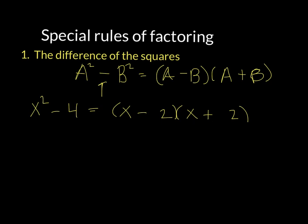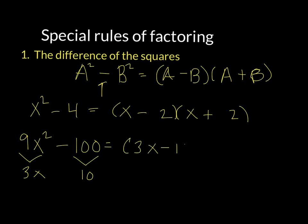Let's try a little bit harder one. Let's say we have 9x squared minus 100. You have to think about what the square roots of each of these are — it's 3x and 10. So you have 3x minus 10 and 3x plus 10. That is the difference of squares. One of the most important things is that the sign between the a squared and the b squared must be a minus. If it is a plus sign, you cannot factor using the difference of squares.